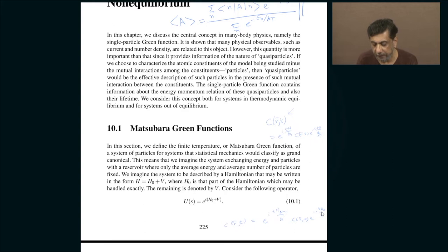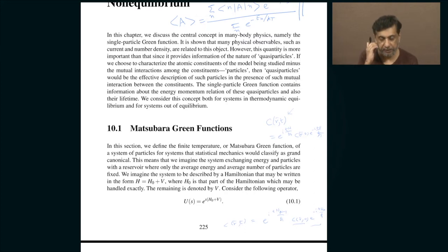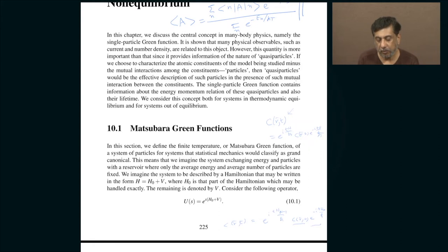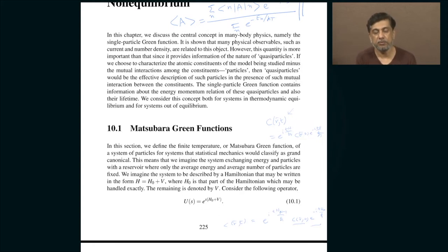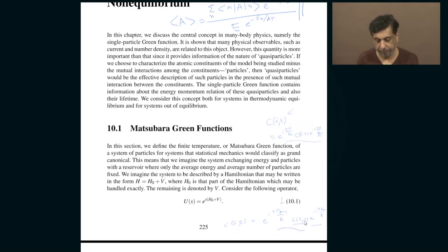When the annihilation operator does not conserve particle number, you must reinterpret the Hamiltonian properly. Acting on a state with n particles, you first evolve using the n-particle Hamiltonian, then annihilate a particle — reducing the count from n to n minus 1. Subsequent operators must then be consistent with n minus 1 particles. That is the only caveat; otherwise the time evolution is the same.